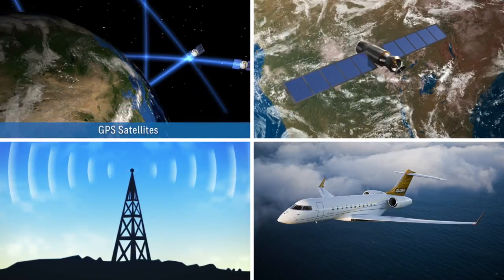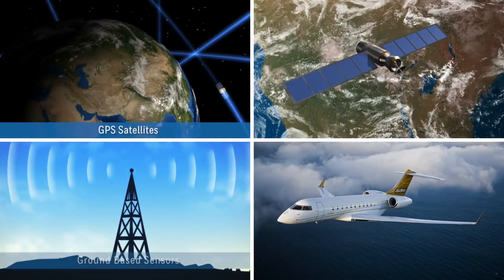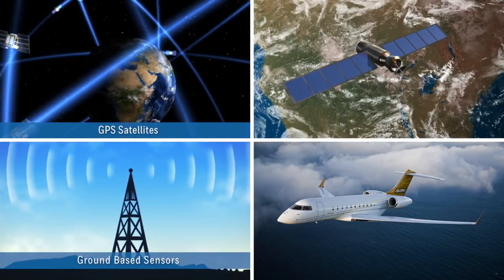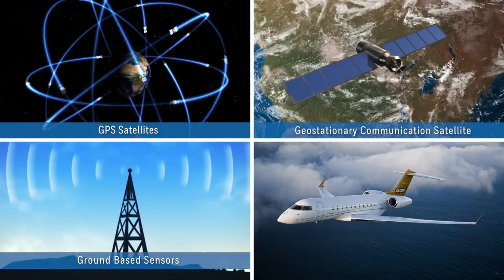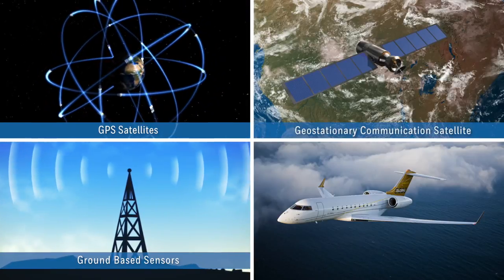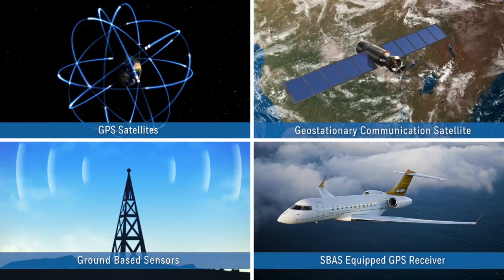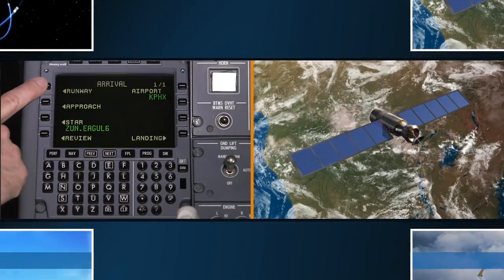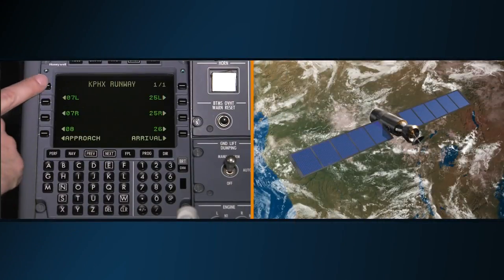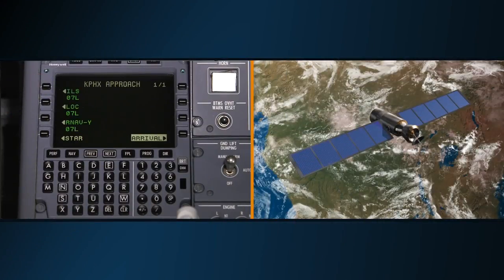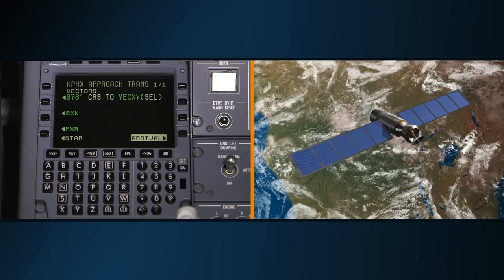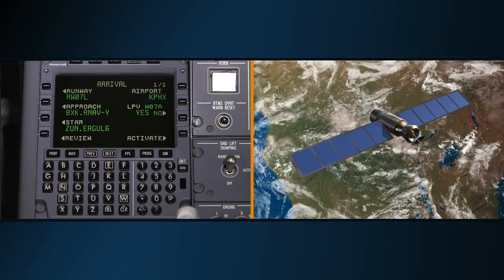SBAS is made up of GPS satellites, a network of ground-based sensors, space-based geostationary communication satellites, and SBAS-capable GPS receivers. An RNAV approach with LPV minimums combines the FMS navigation database with SBAS signals from GPS satellites to produce an approach that closely mimics an ILS.